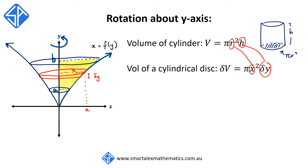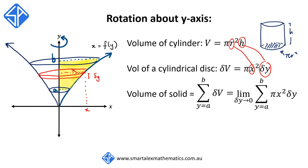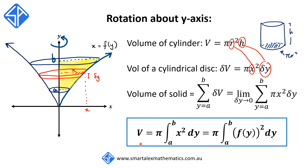Then to find the volume of the solid, we simply take the summation of delta v going from y is equal to a to b. Delta v gets replaced by the expression pi times x squared delta y, and we take the limit as delta y approaches zero. In other words, we make the disk very very thin so that we have a smooth surface, and all of this gets replaced by the integral operation so that we have the formula V is equal to pi times the integral going from a to b of x squared dy. Because we're integrating with respect to y, we need to express x in terms of y, so our final formula is V is equal to pi times the integral going from a to b of f of y squared dy.